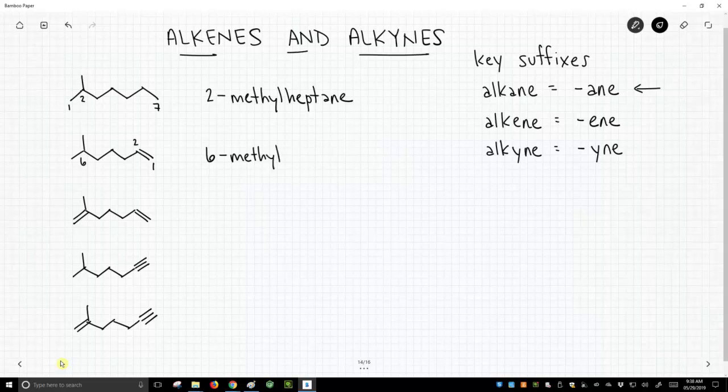So this will be 6-methyl. Now we have to tackle this chain. This is no longer a heptane, it's a heptene. Furthermore, the double bond could be in a lot of different places. So we have to specify the alkene is in the 1 position. So we call this 1-heptene.